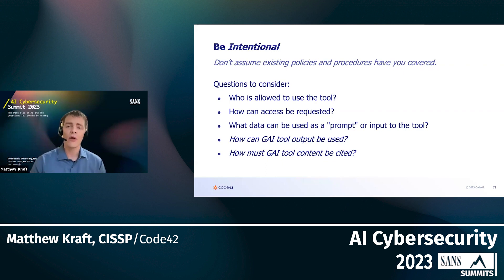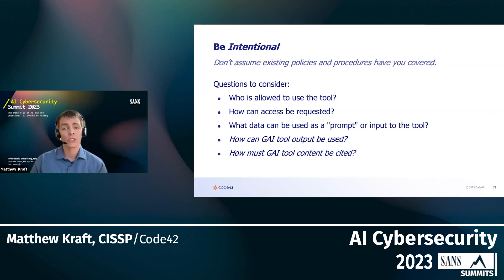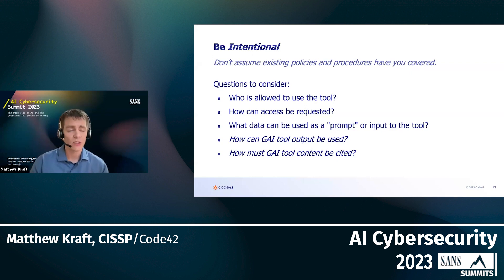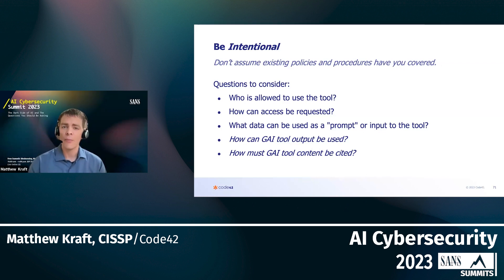Those stakeholders should get together and think about answers to key questions: Who is allowed to use the tool? How can access be requested and when does it need to be accessed? What data can be used as a prompt — what can you put into the tool? And what are the risks of what comes out and how it can be used within the enterprise? For example, if a developer puts code into ChatGPT or Google Bard and asks for source code back, you've put in proprietary data and may be getting someone else's proprietary data out. The same applies to marketing campaigns using tools like Midjourney, Dolly, or Stable Diffusion — who owns the copyright of that output art?